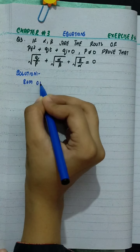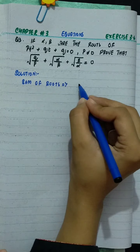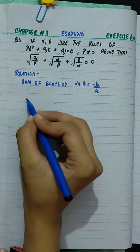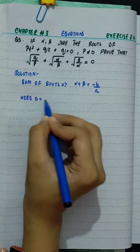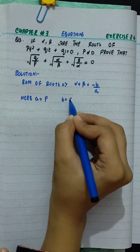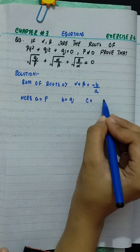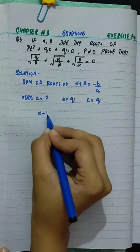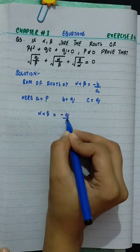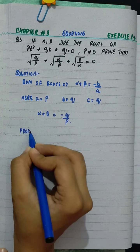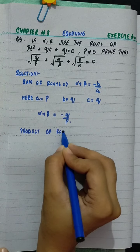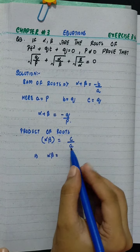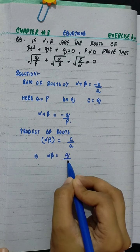Solution. Sum of roots: alpha plus beta equals minus q over p. Here a is p, b is q, and c is also q. Product of roots: alpha times beta equals c over a, so alpha beta equals q over p.